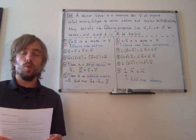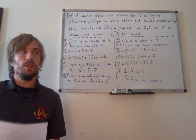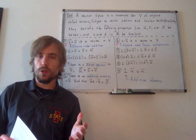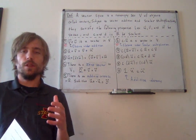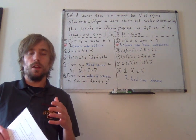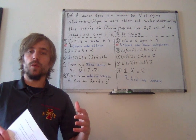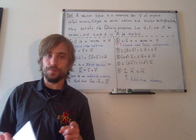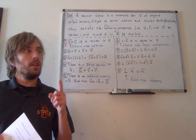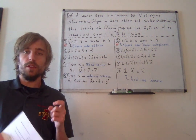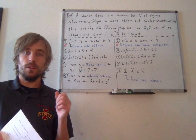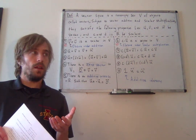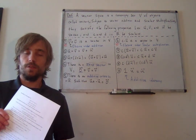This is video number one of section 4.1. You might remember at the beginning of the course when we started talking about vectors, I mentioned that there's a more abstract way of defining what a vector is. In this lecture, I want to convince you that a vector can be something more than just a line with direction and magnitude, or even an ordered list of numbers.